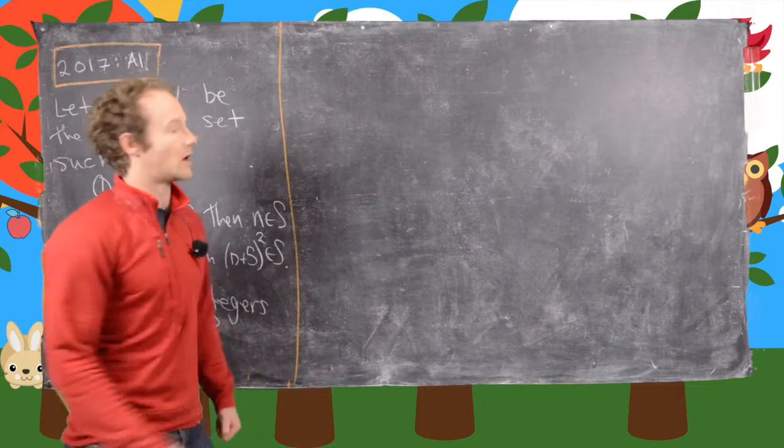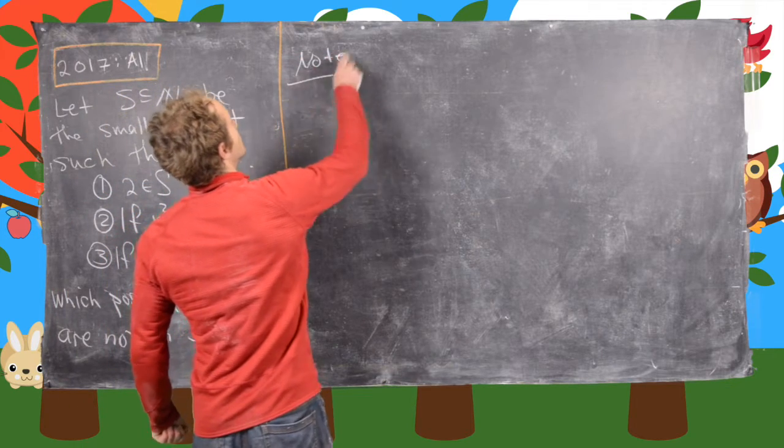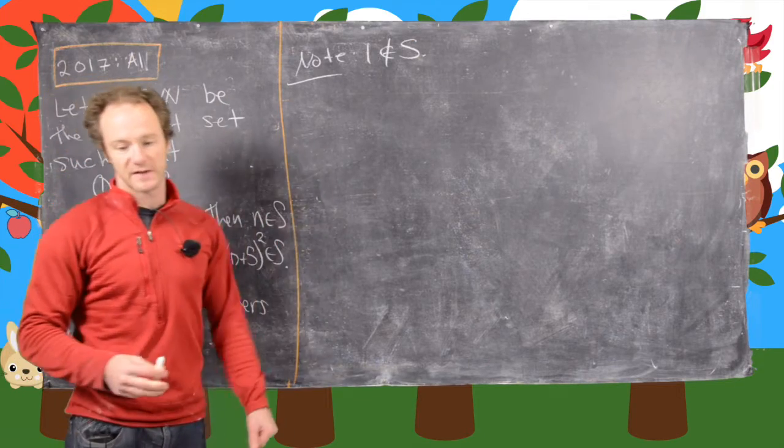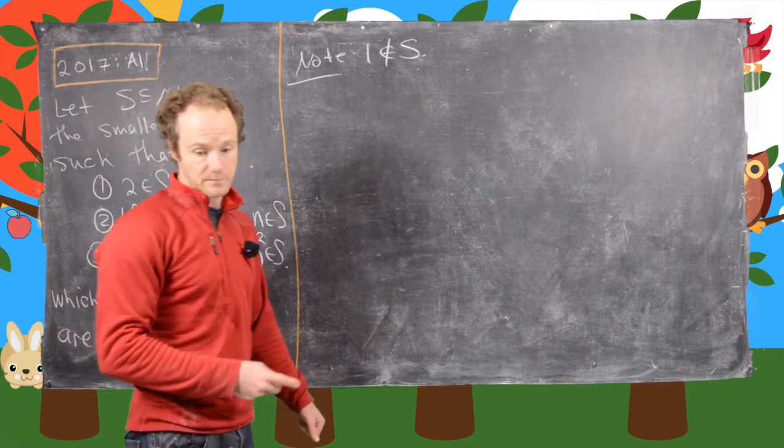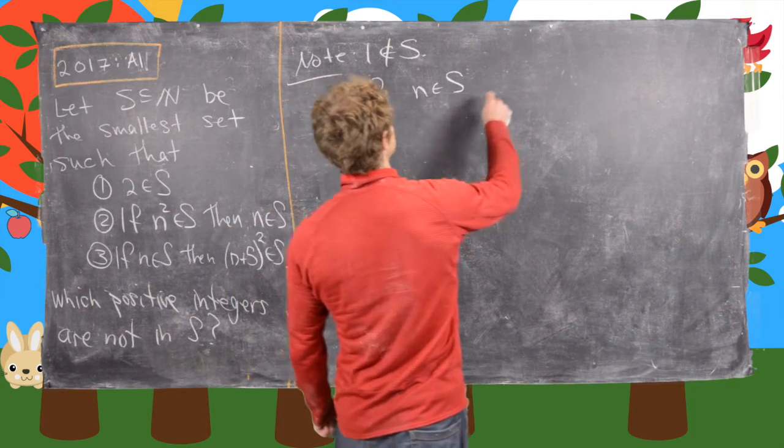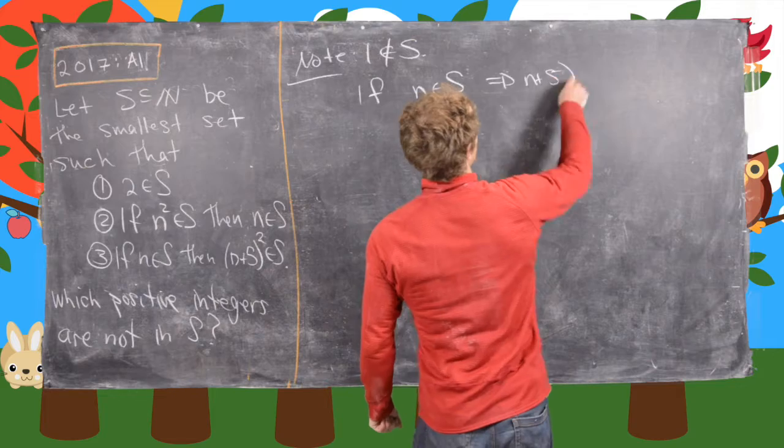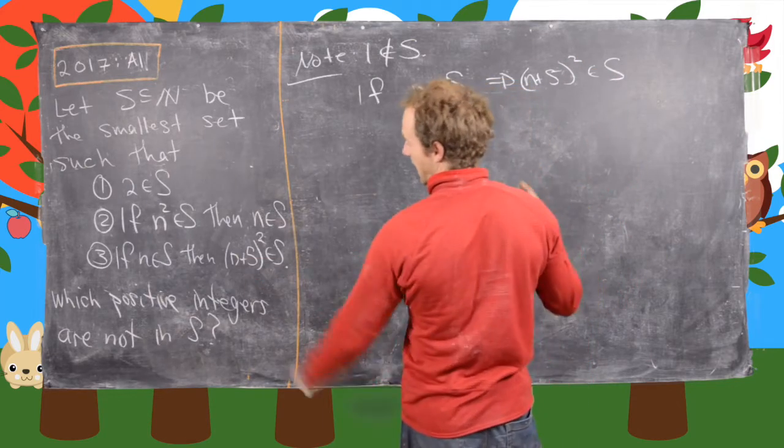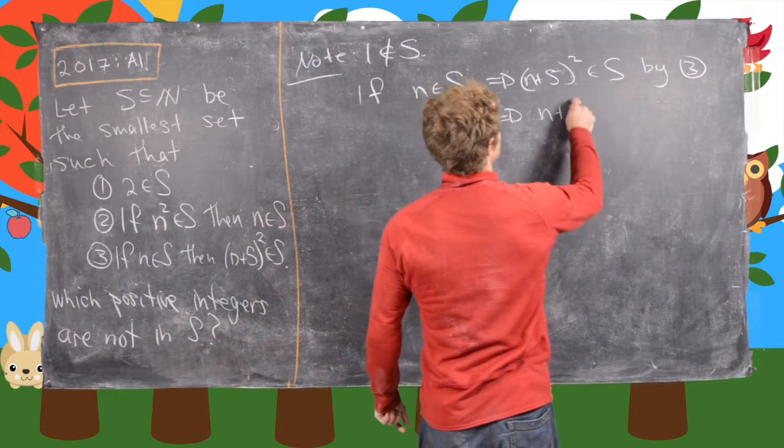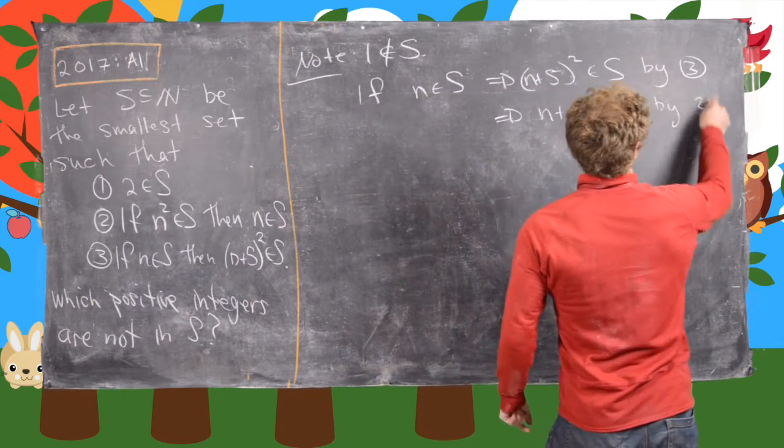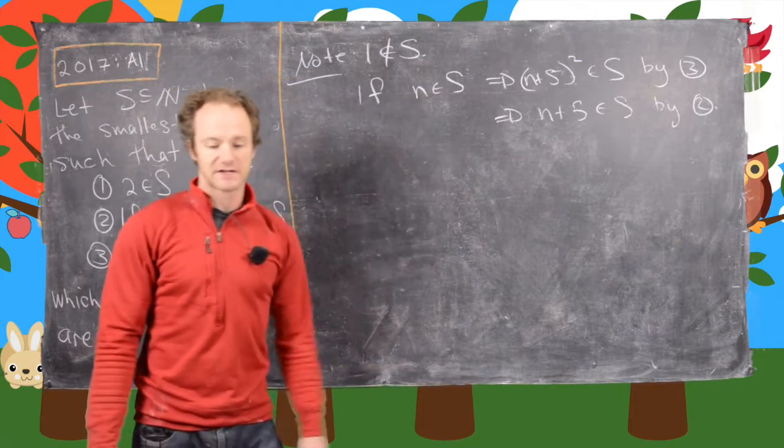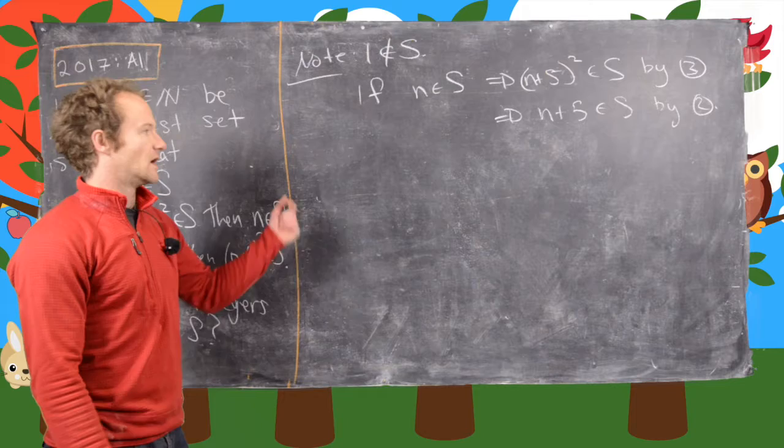So now let's notice first of all that 1 is not an element of S. So that's pretty clear from the setup. And then also we can do the following. If N is in S, then that means N plus 5 squared is in S by 3. But then that means N plus 5 is in S by 2. So it will actually be useful to just use the fact that N is in S to get N plus 5 in S from time to time.